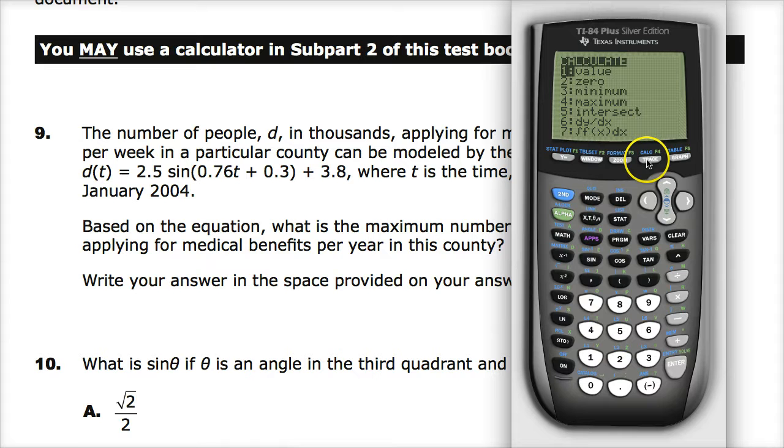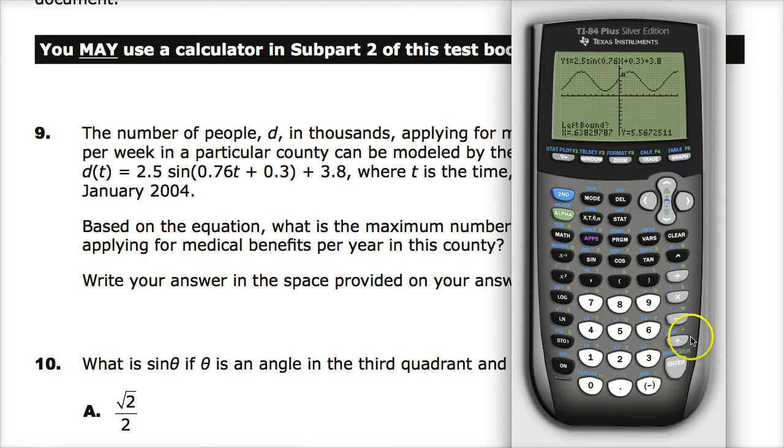So I hit second and then trace to do that. Maximum. So it'll ask me some questions. Left bound just means where's a point that's left of the highest point, and I'm going to say right there. Then it says right bound, so I need to give it an area that's right where I want it to be. If you try to do left and right and you somehow make it so right that you go to another peak, it makes weird answers. So just focus on one at a time. And then guess is like, tell me basically which one you want.